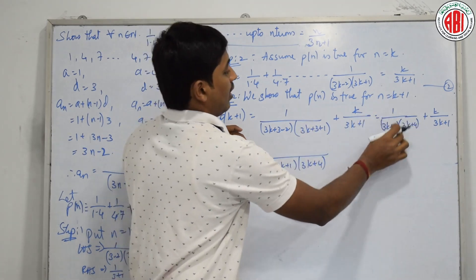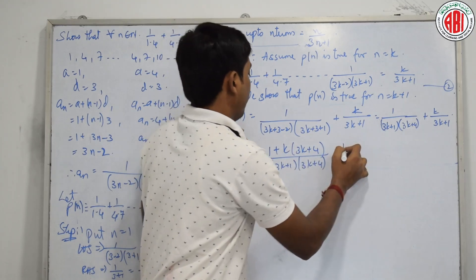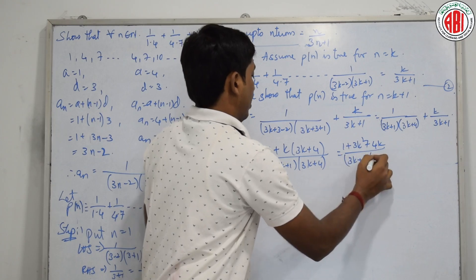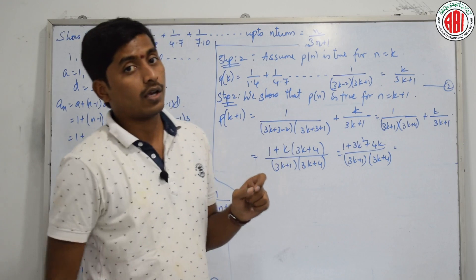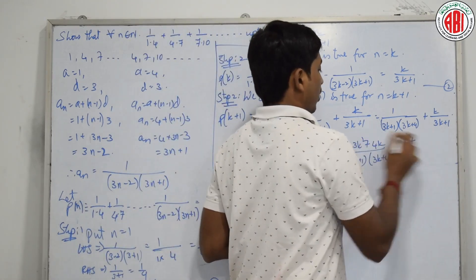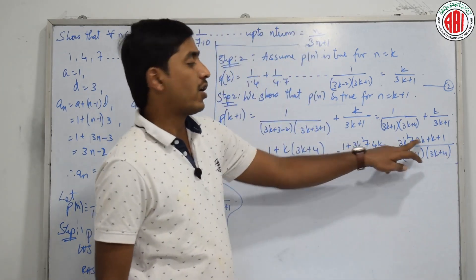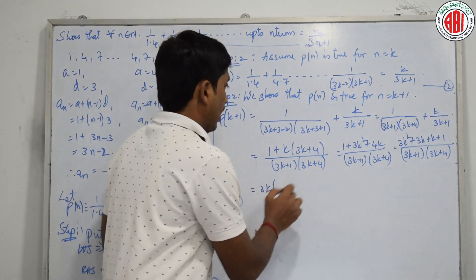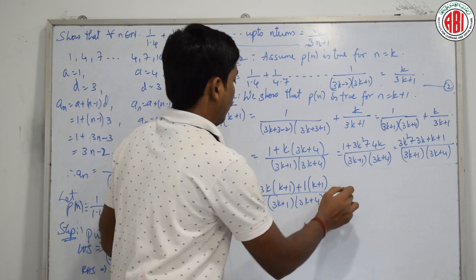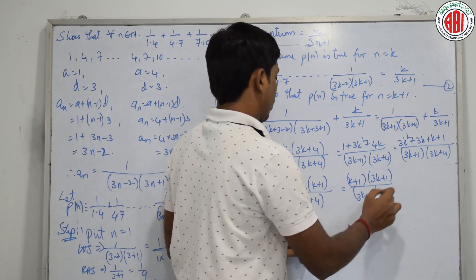In the numerator, we get 1 plus k(3k+4), which is 3k squared plus 4k plus 1, all divided by (3k+1)(3k+4). We can factorize 3k squared plus 4k plus 1 as (3k+1)(k+1). We can take 3k common from the first two terms, giving 3k(k+1) plus 1(k+1), then take (k+1) as common to get (k+1)(3k+1).